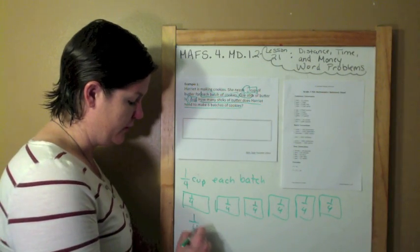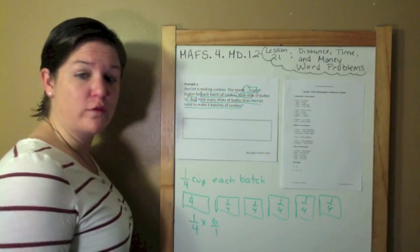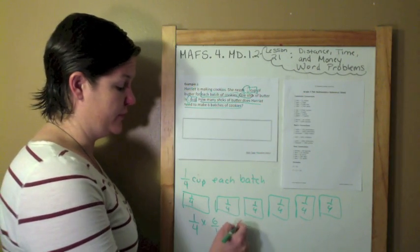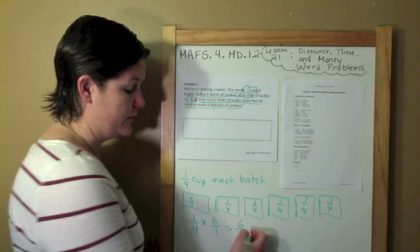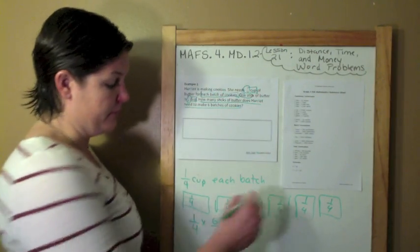I'm going to multiply one fourth times six, which I'm going to convert to six over one. One times six equals six. Four times one equals four. So that's six fourths cups of butter that she is going to need.